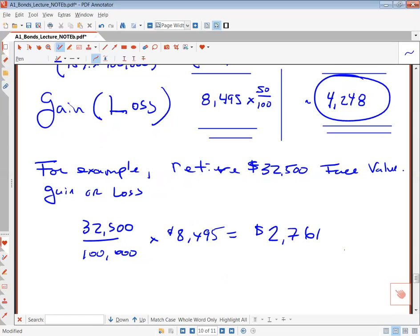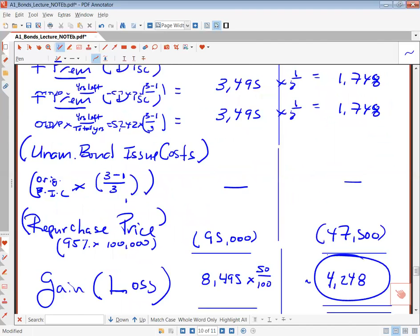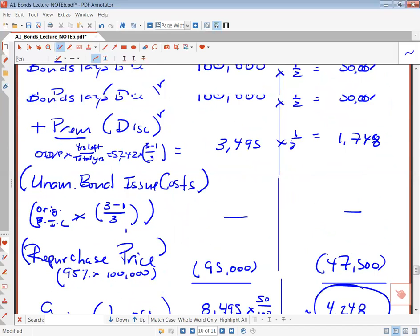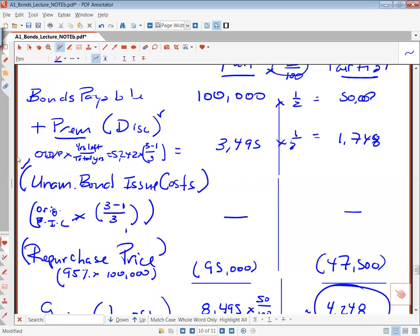Okay, so by doing it this way, you make it less likely that you're going to make errors on the unamortized bond issue cost and the premium or discount calculation, which are really the two tricky parts of gain or losses. And that's it for the example 6C.